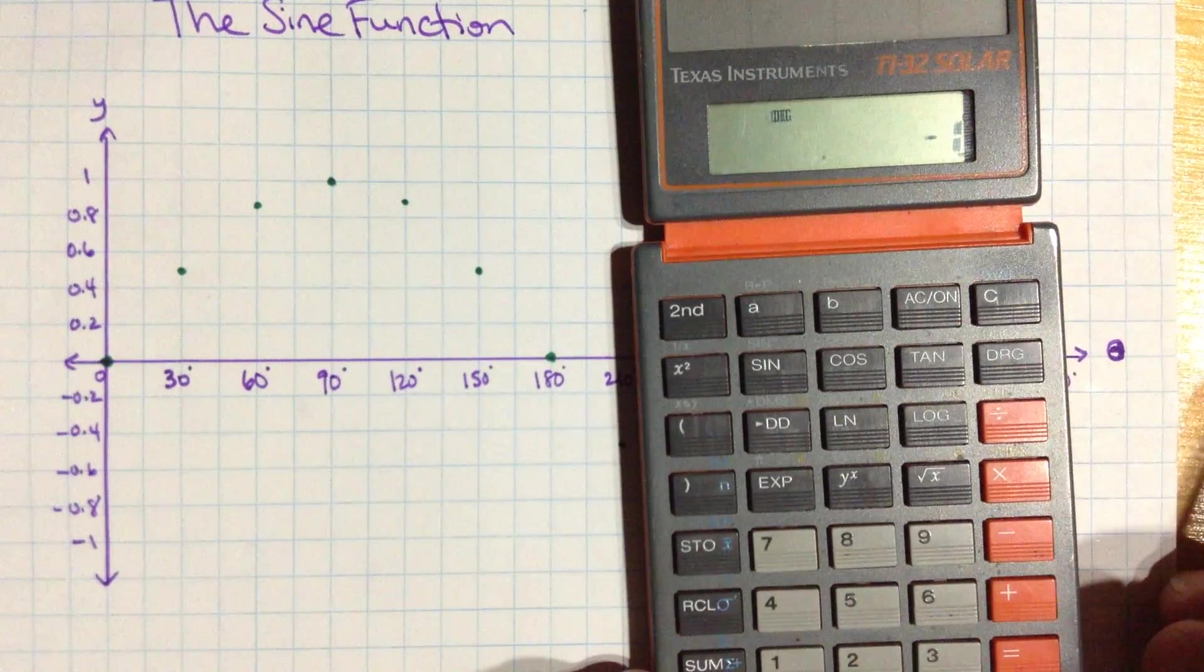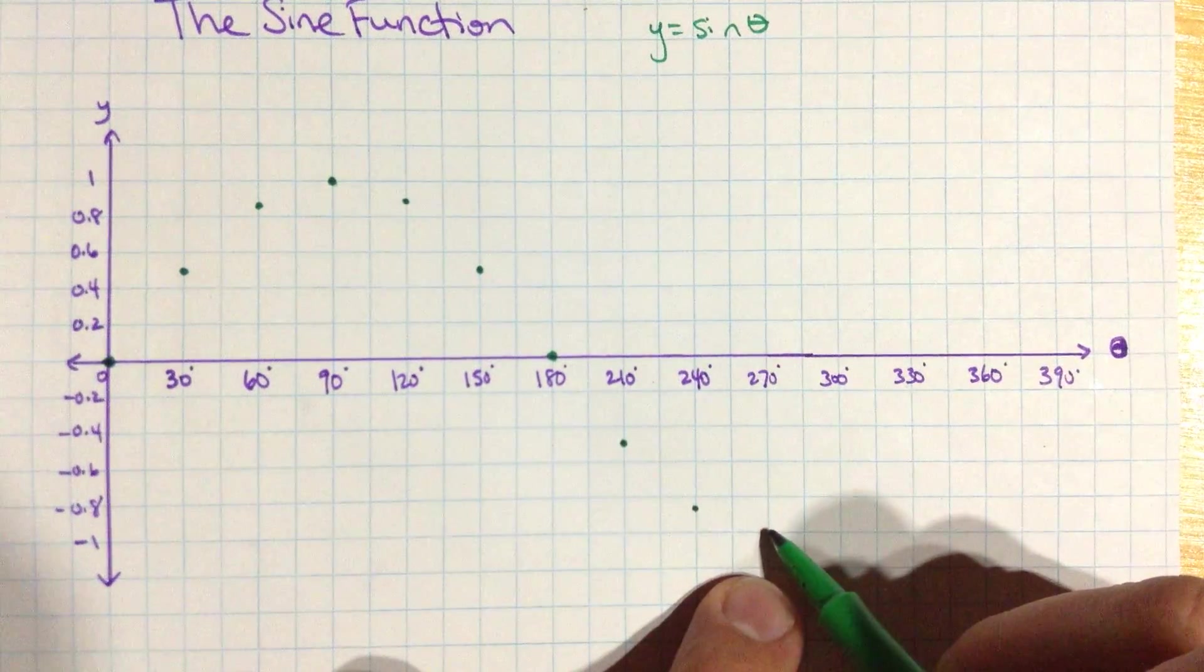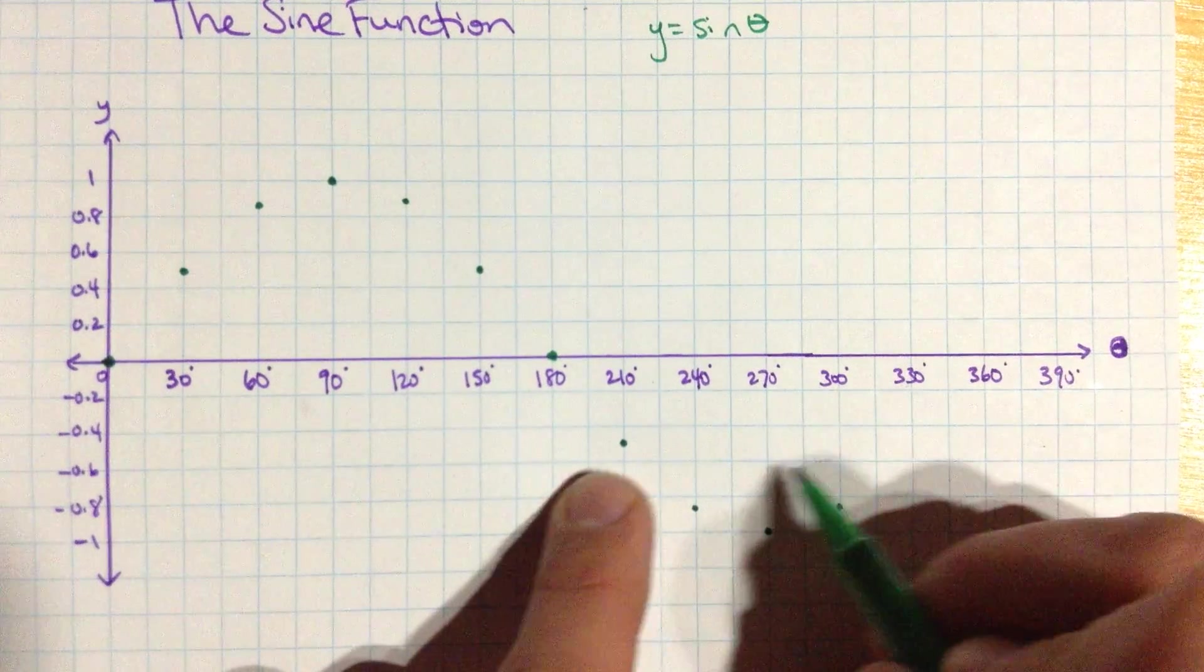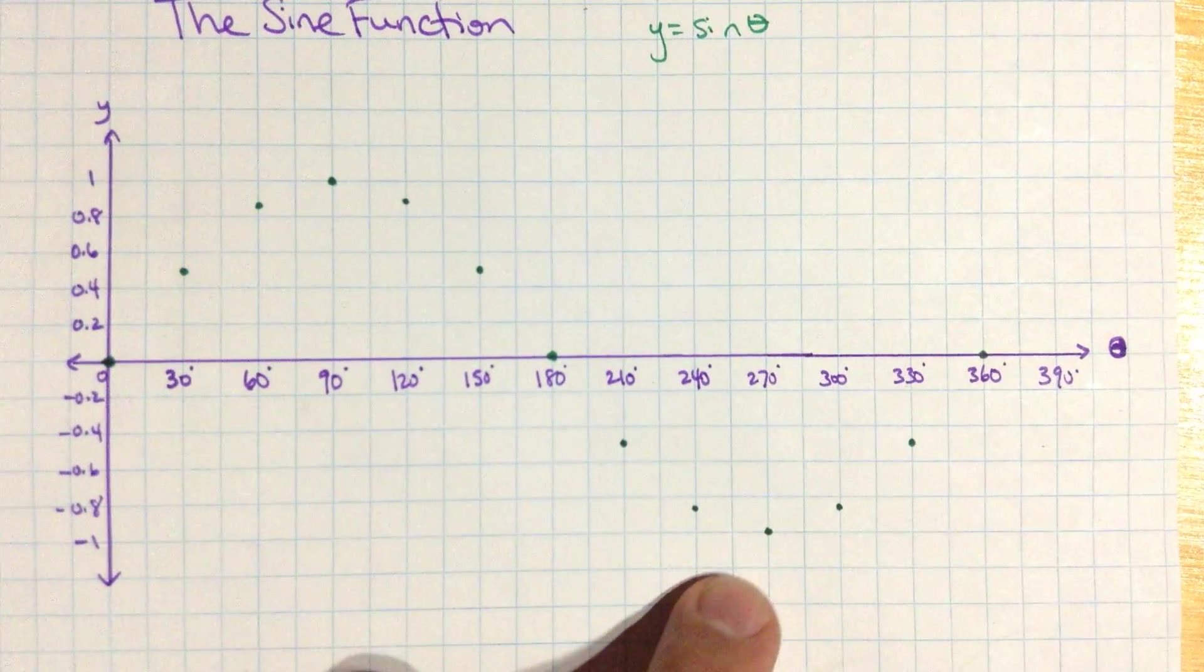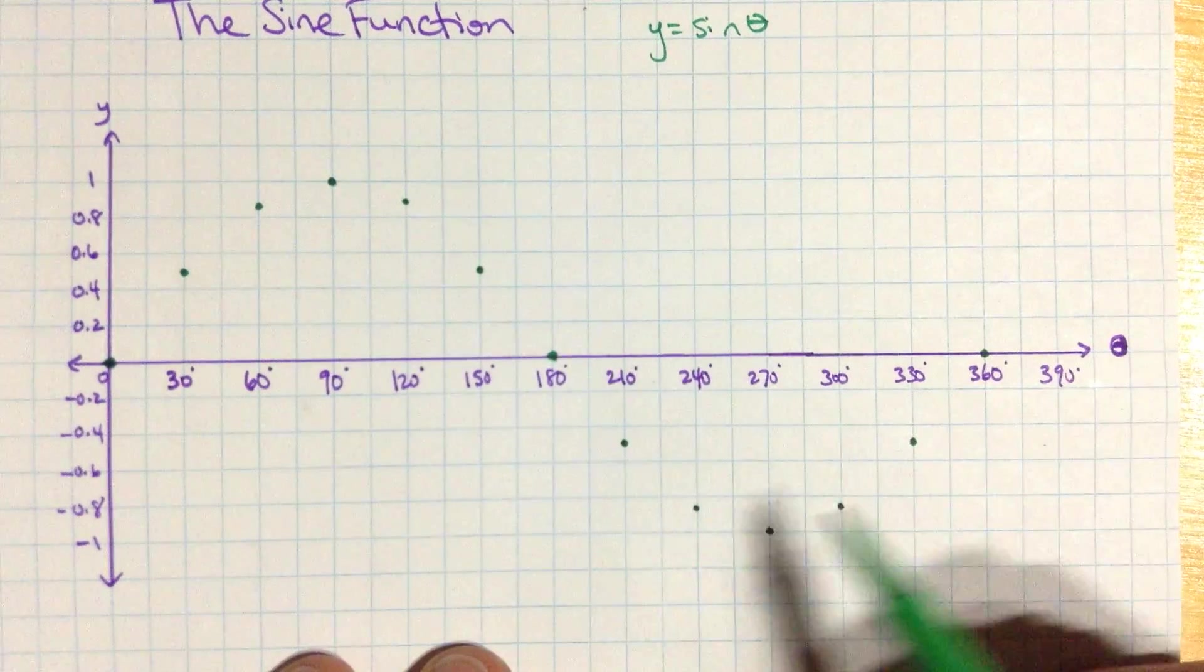270 sine. That's negative 1. And we're going to get the same pattern on the reverse. And you can try those on your calculator. And at 360, that's the same as 0, which we had looked at before. And so that is the sine curve.